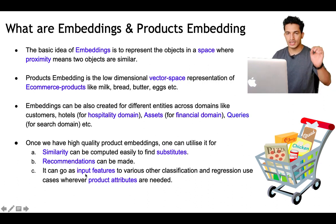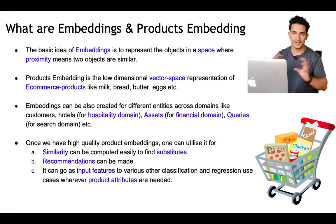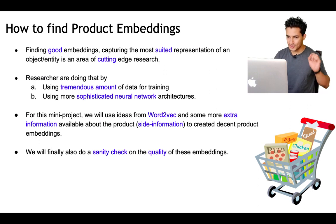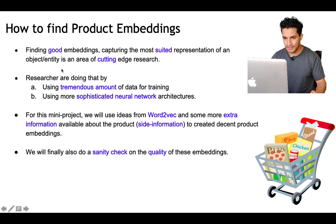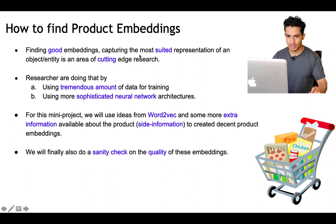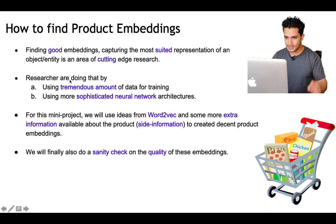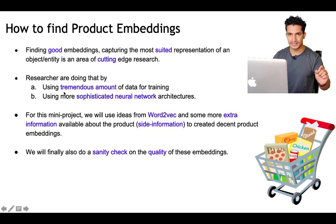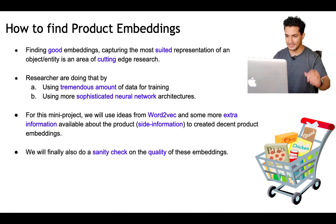The question arises: embeddings are good, but how do we find them? Finding good embeddings that capture the most suited representation of an object or entity is an area of cutting-edge research. Researchers do this by using tremendous amounts of data and increasingly sophisticated neural network architectures and ideas.